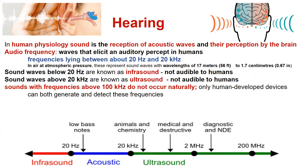In human physiology, sound is the reception of acoustic waves and their perception by the brain. The audio frequencies are waves that elicit an auditory perception in humans, lying between about 20 Hz and 20 kHz. Sound waves below 20 Hz are known as infrasound, and sound waves above 20 kHz are known as ultrasound.